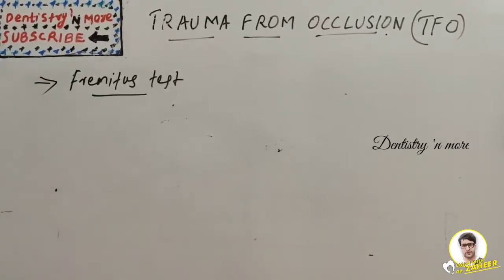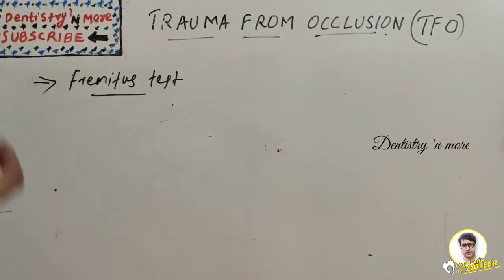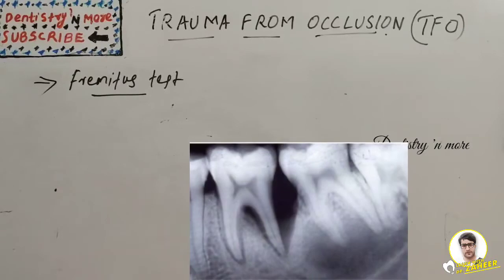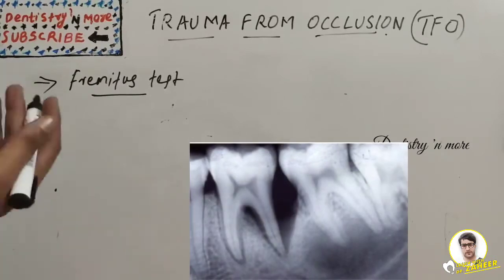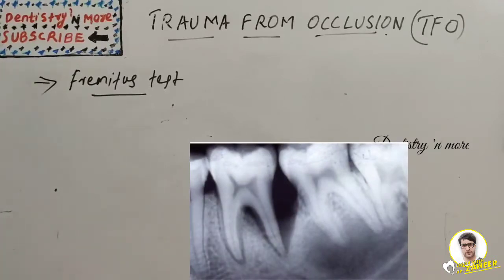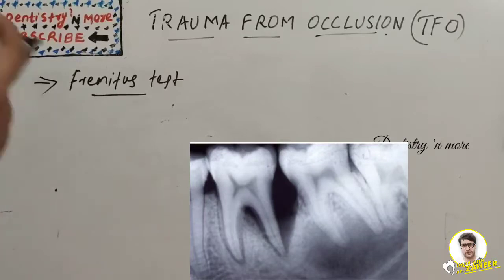Radiographic changes in TFO include vertical bone loss rather than horizontal destruction, root resorption, widening of the PDL space at the crest, funnel-shaped appearance, and angular defects.